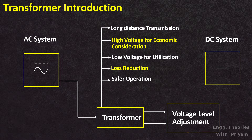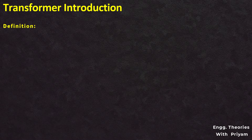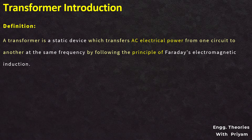Transformers also allow the amount of loss to be reduced and guarantee safer operation of the system. Because transformers do not contain any moving parts and have a structure that is both rugged and long-lasting, they require relatively minimal maintenance. They also have very high efficiency, reaching up to 99% in some cases. As a consequence, it is accurate to say that a transformer is a backbone of the power system.